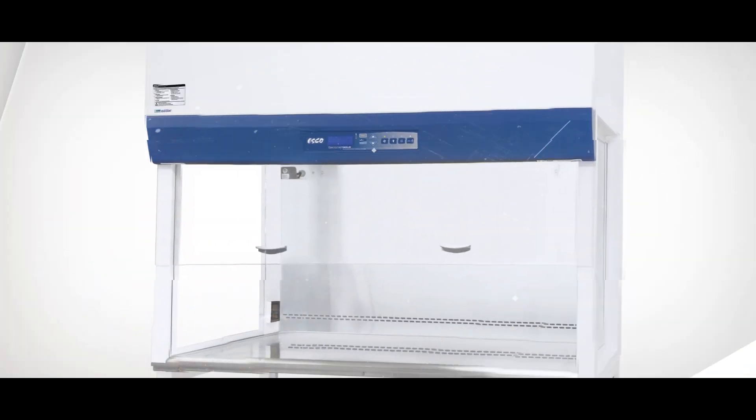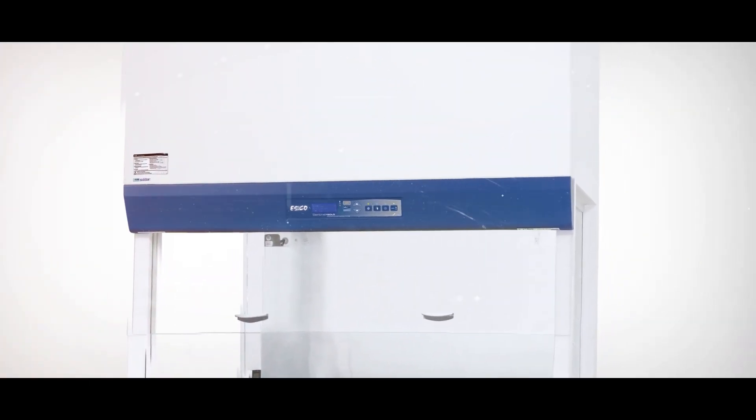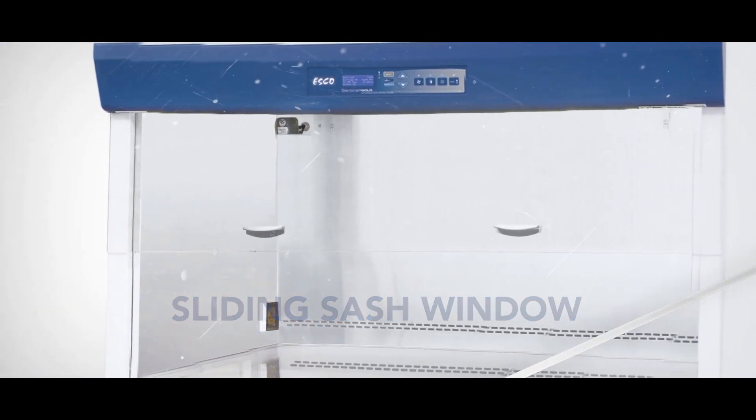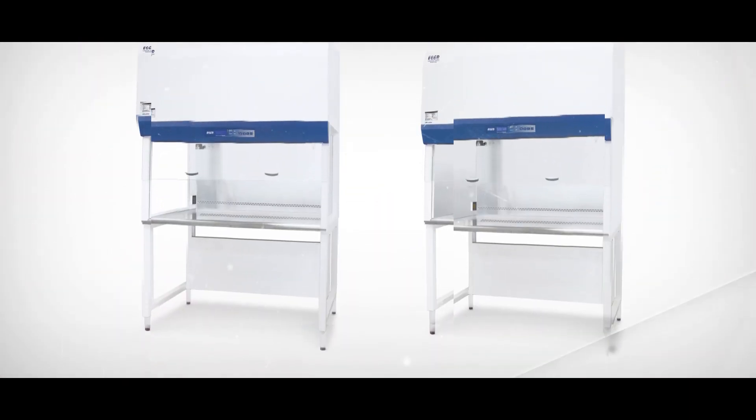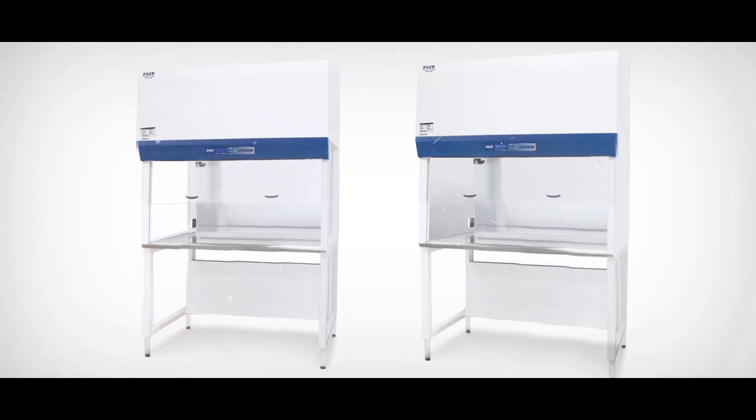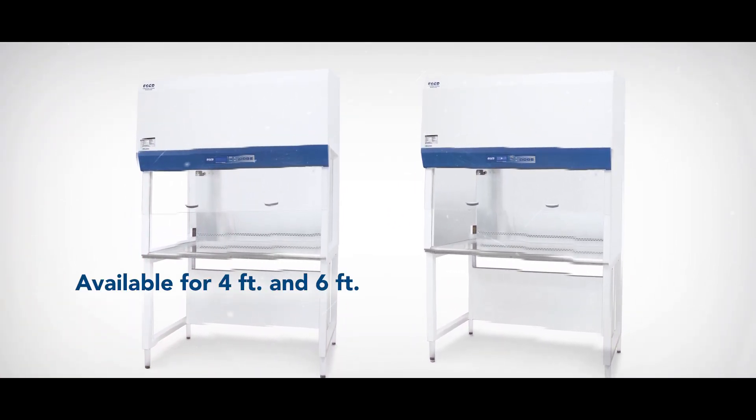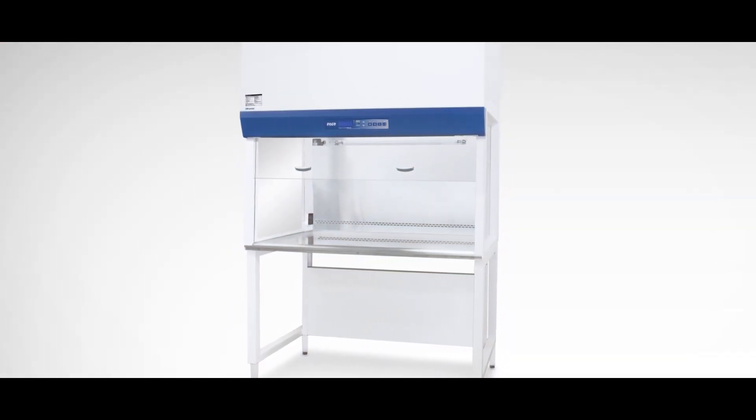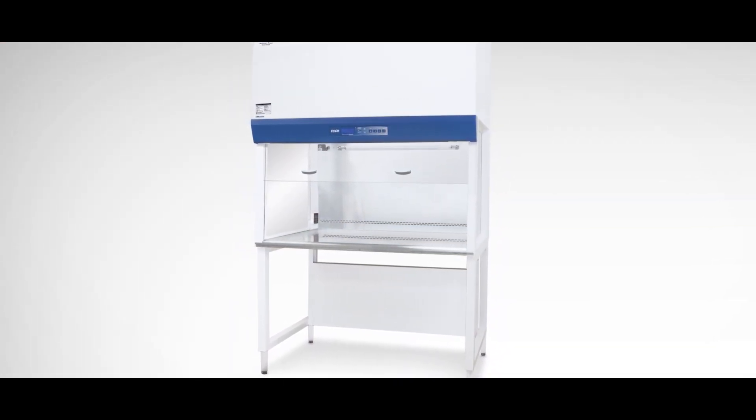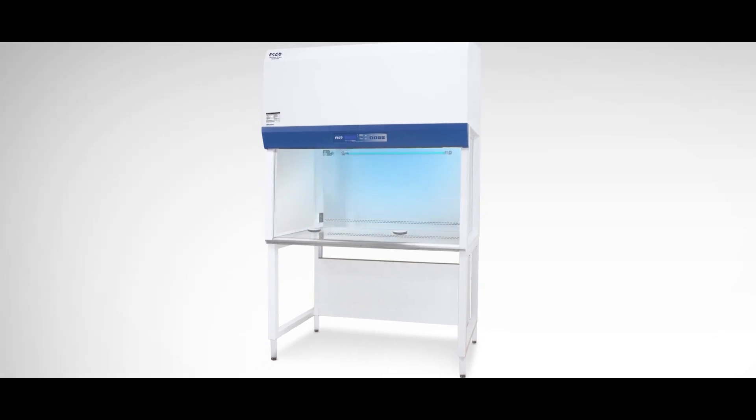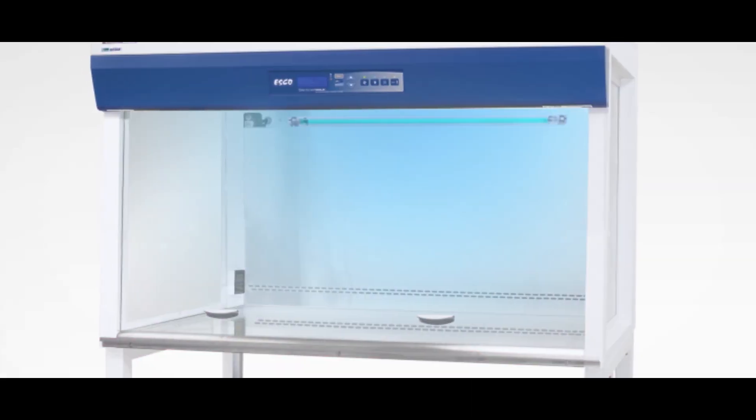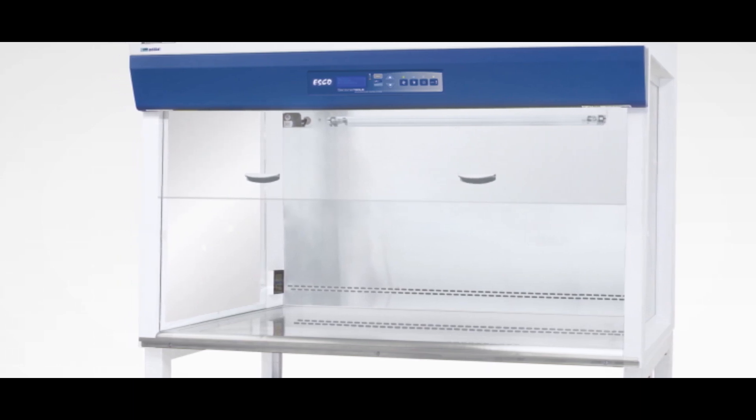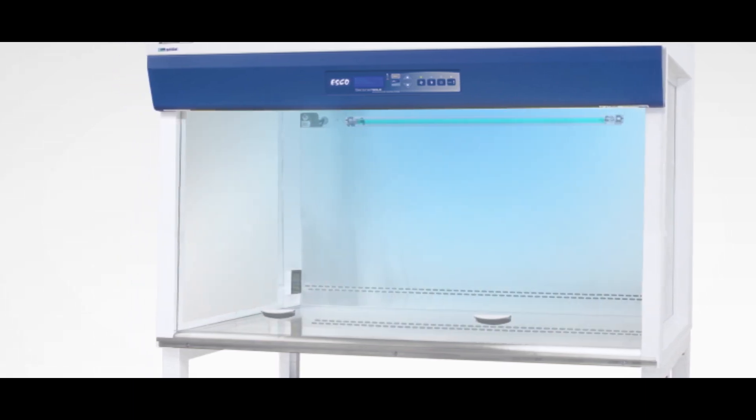Esco now offers the option of a sliding sash window for the Airstream vertical laminar flow cabinet. This new feature is available for glass and stainless steel sidewalls in both 4-foot and 6-foot sizes. The new models provide the convenience of a manual sliding sash window without needing to order a front cover for UV protection, and simply sliding the sash window activates the UV light.